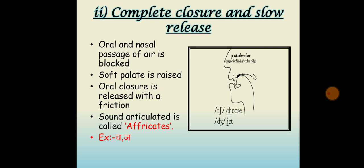The second stricture is complete closure and slow release. The active and passive articulators come close to each other so that the oral passage is closed, and the soft palate is raised so that the nasal passage of lung air is also closed. The oral closure is removed slowly but instead of an explosive noise, a friction is heard. Sounds produced with this stricture are called affricates. For example, the initial sounds in the English words chin and jam are affricates.